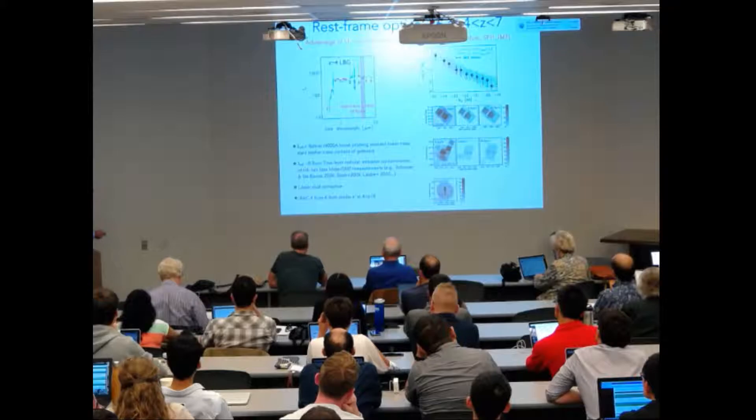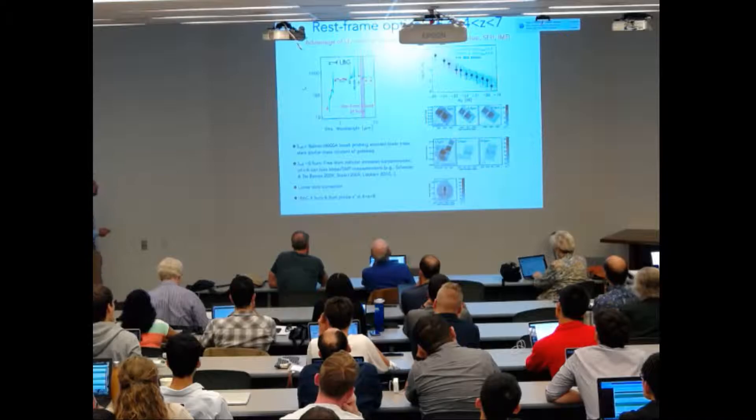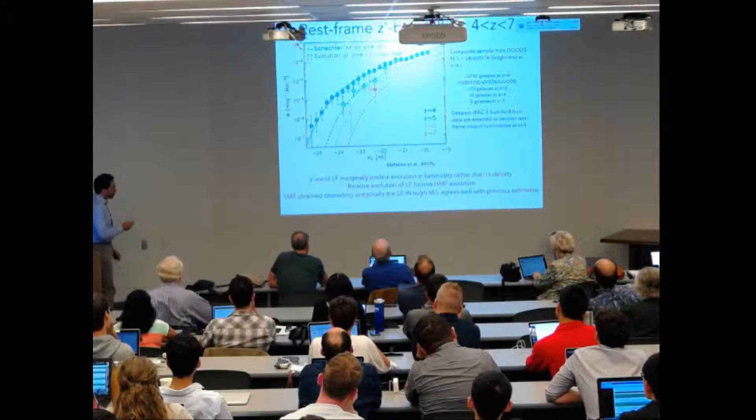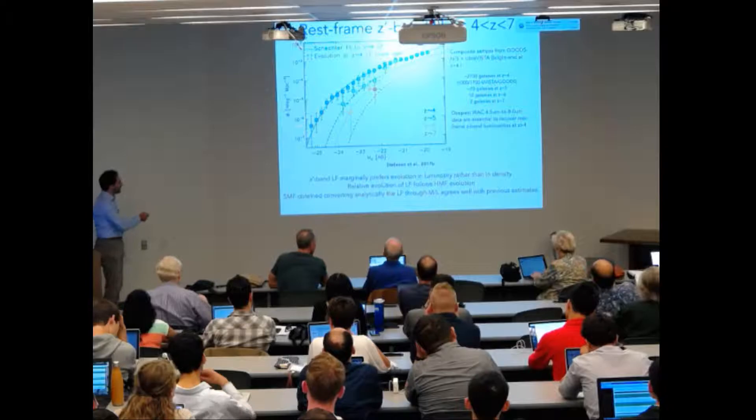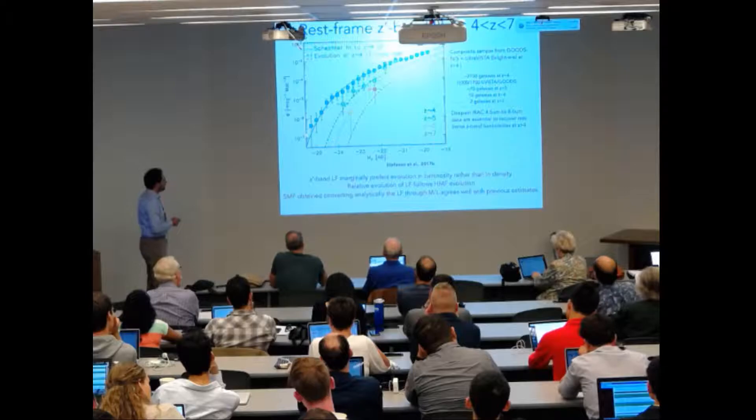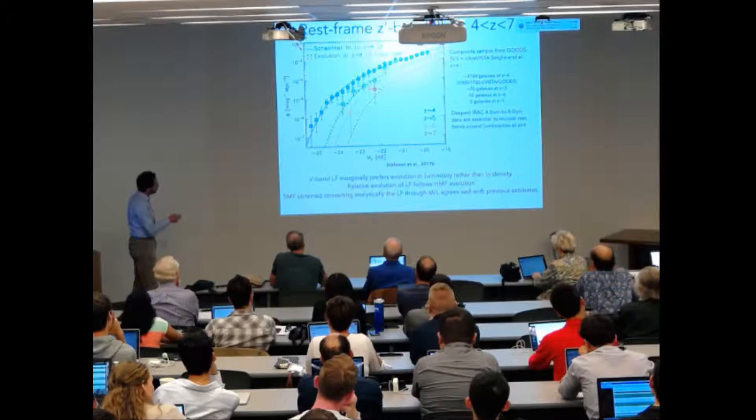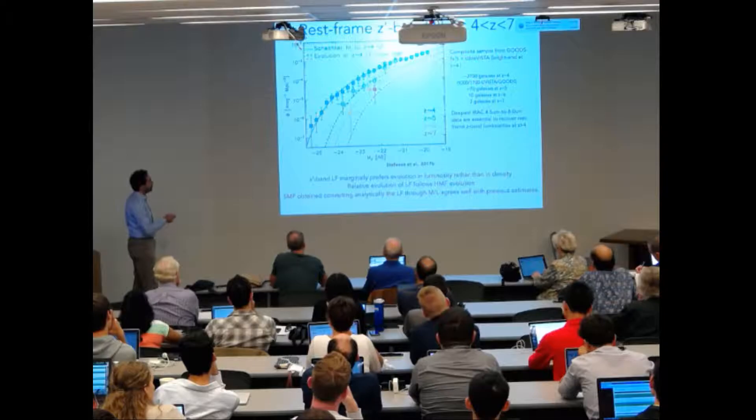so that it traces the evolved stellar population, the emission from the stars that constitute most of stellar mass. Thanks to quite deep observed IRAC data, we can trace the rest frame z-band to redshift as high as potentially eight, but unfortunately we only get seven due to sensitivity. So we measure the evolution of the rest frame z-band luminosity function